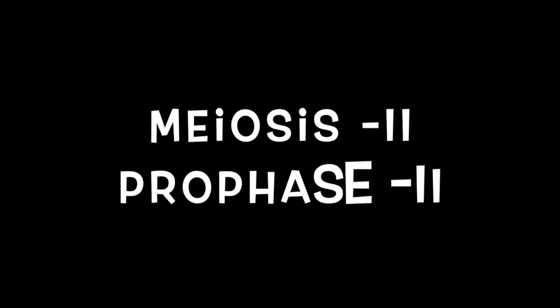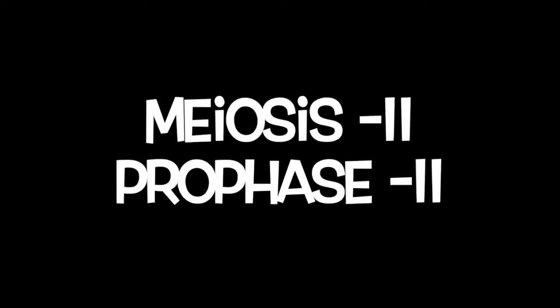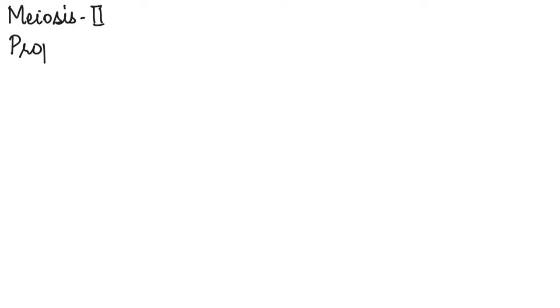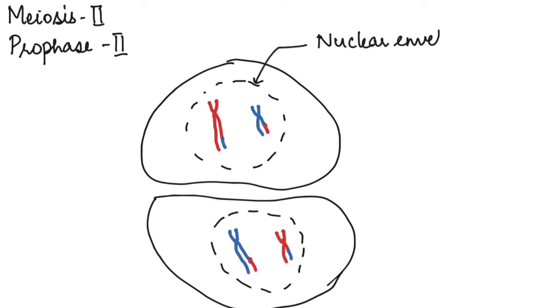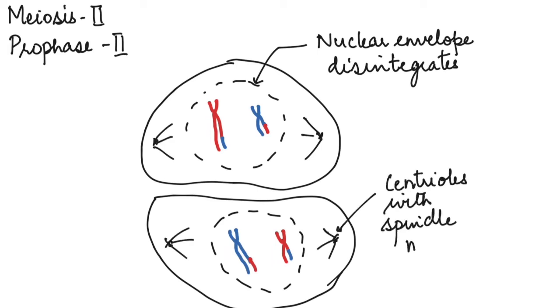After meiosis 1, meiosis 2 begins. Now meiosis 2 does not have an interphase stage unlike other divisions and it directly follows with the prophase stage. So here we can see that the nuclear membrane is again starting to disappear and the chromosomes have condensed and are clearly visible here. The centrioles with the spindle microtubules are formed.